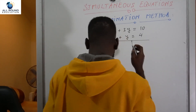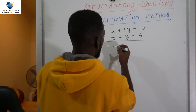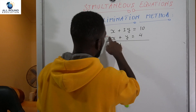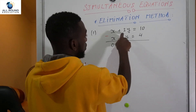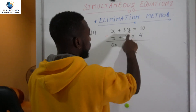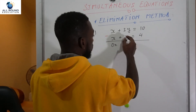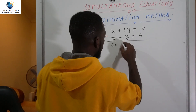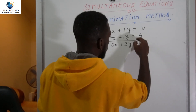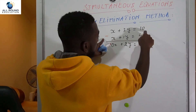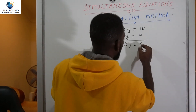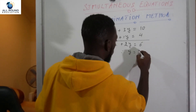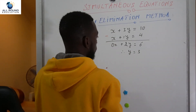When we subtract the second equation from the first, x minus x gives us zero. Then 3y minus 1y gives us 2y, and 10 minus 4 equals 6. So we have 2y equals 6, therefore y equals 3. That is our first value.